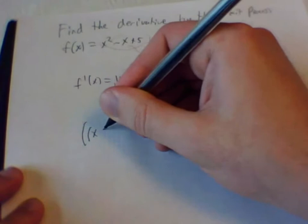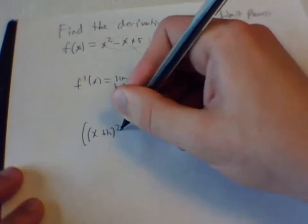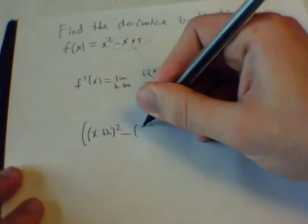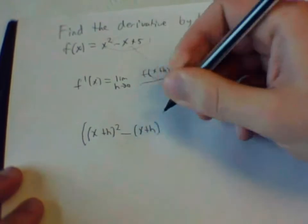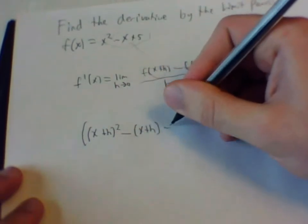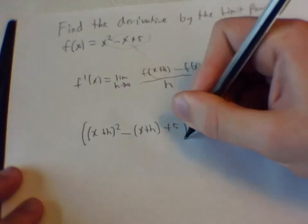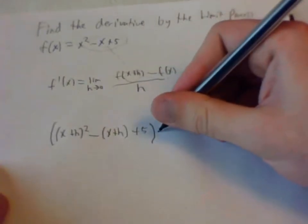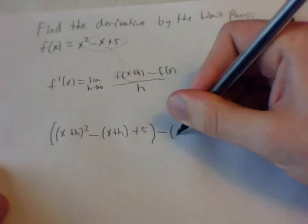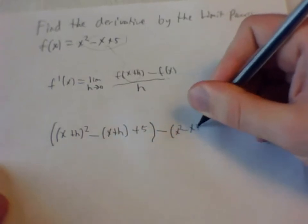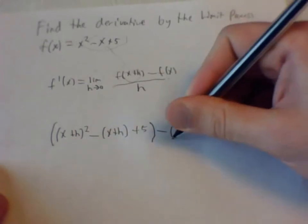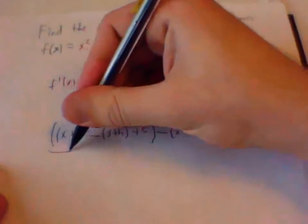x plus h squared minus x plus h plus 5 minus x squared minus x plus 5. This is going to be all over h.